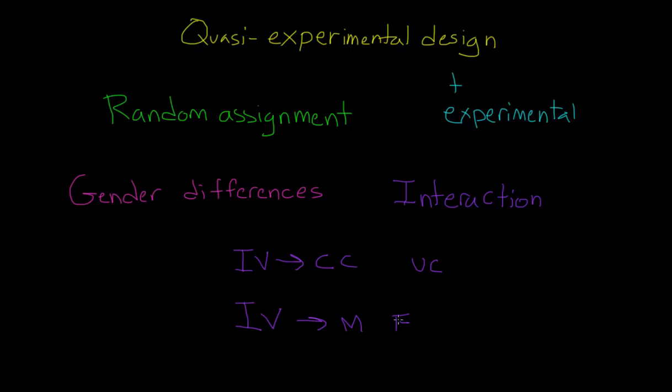And so we have two different things that we're looking at, and we can look at them independently, but we can also look to see whether or not they interact with each other. So maybe I think that women will perform better on the comfortable chairs whereas men will perform better on the uncomfortable chairs. Or maybe I think that they both perform the same on the comfortable chairs but that women and men might somehow be different on the other ones.